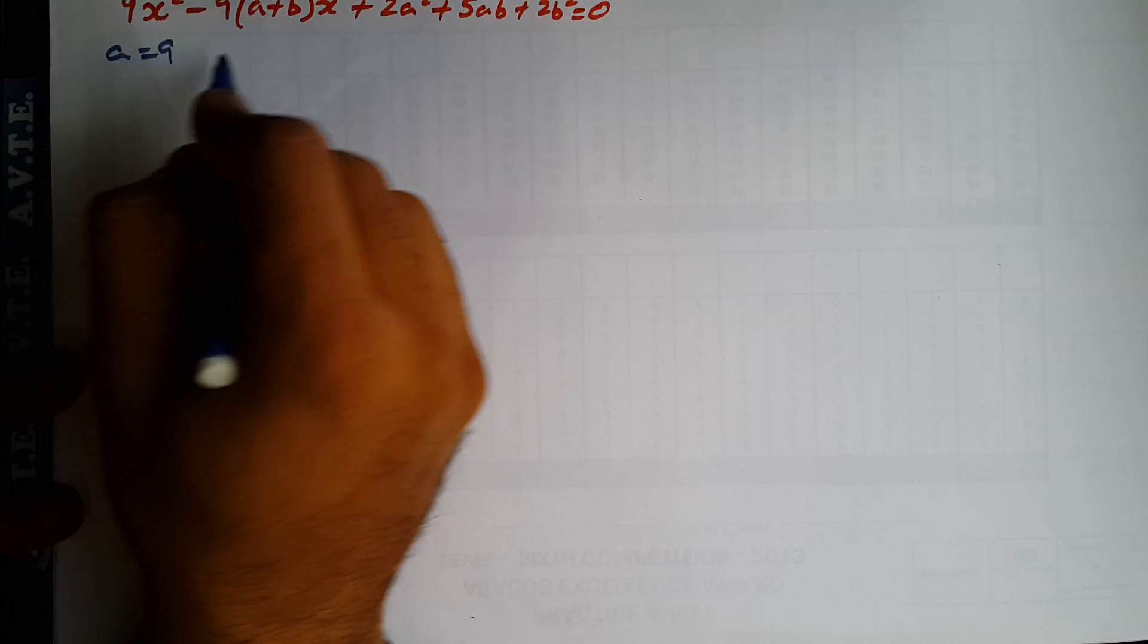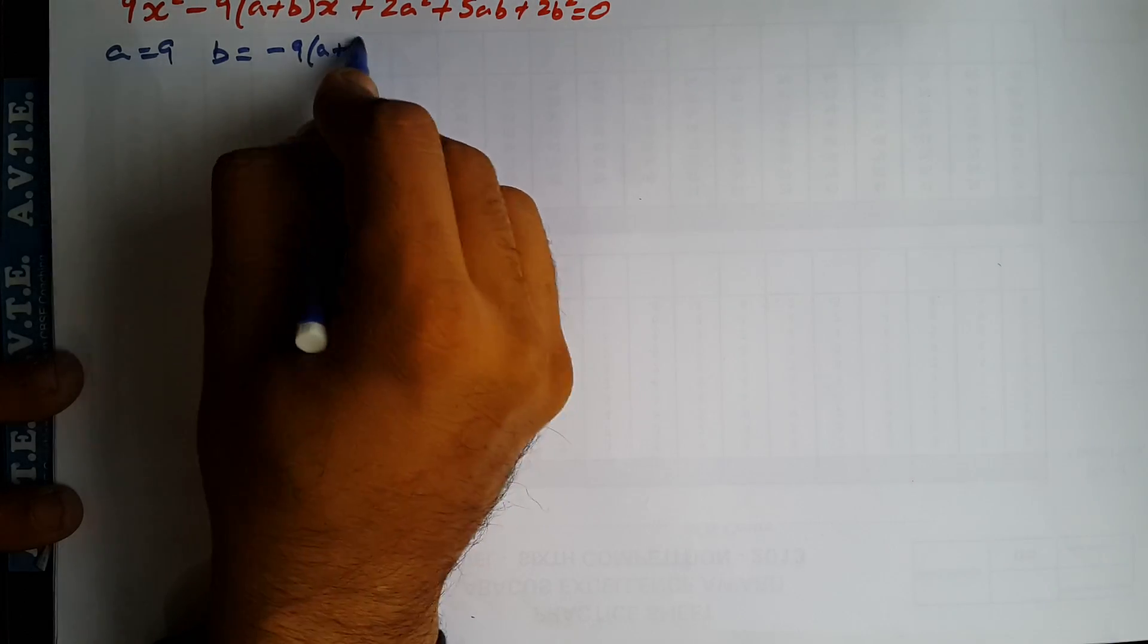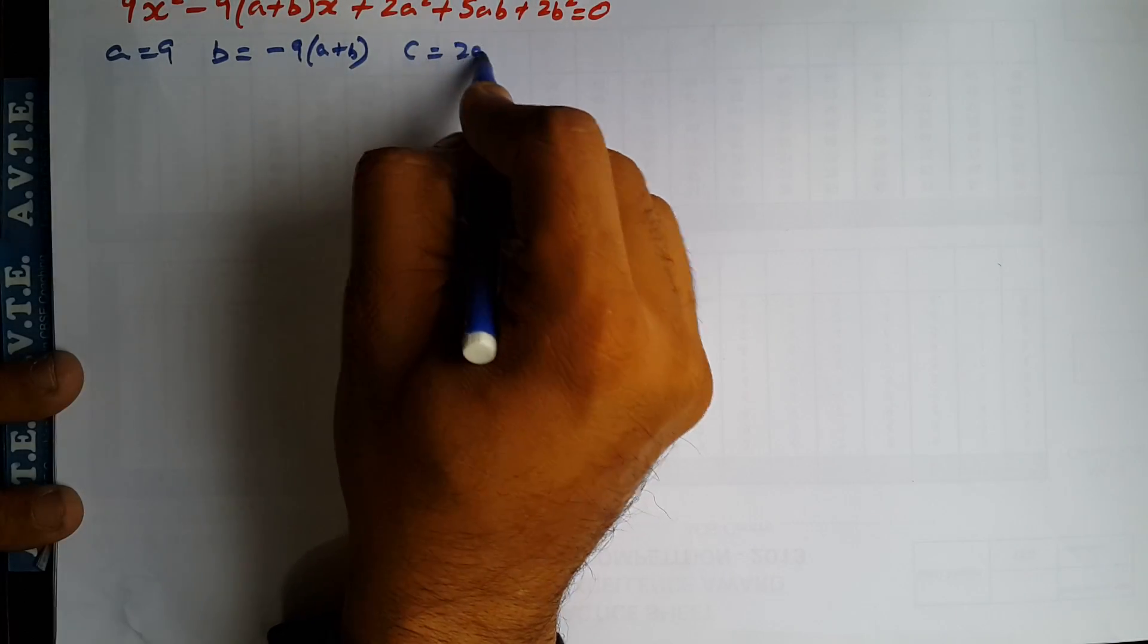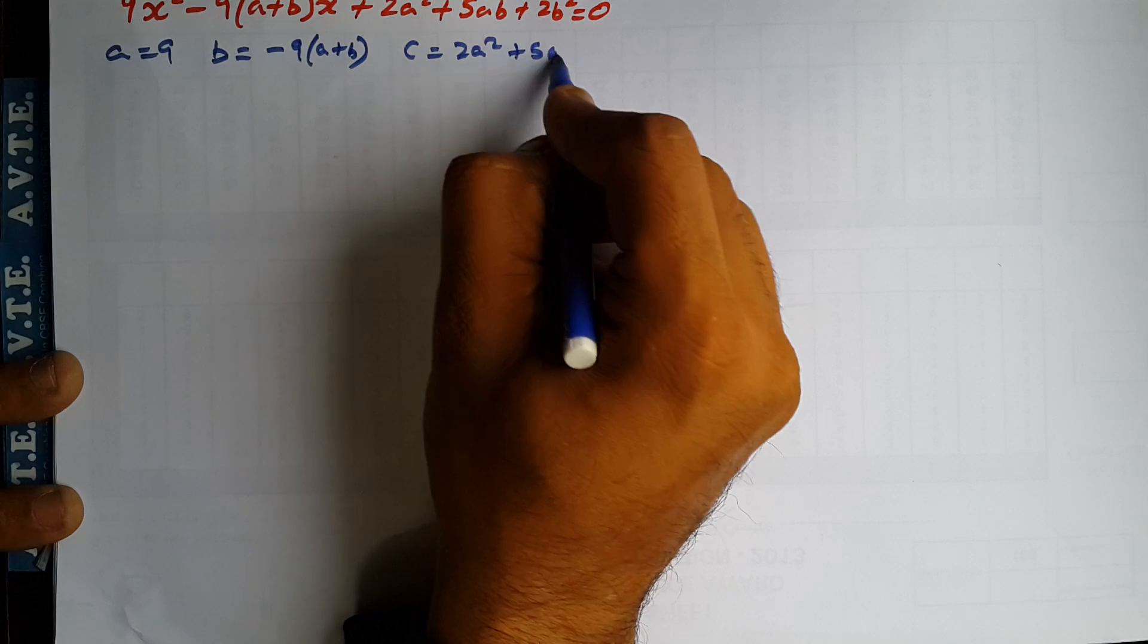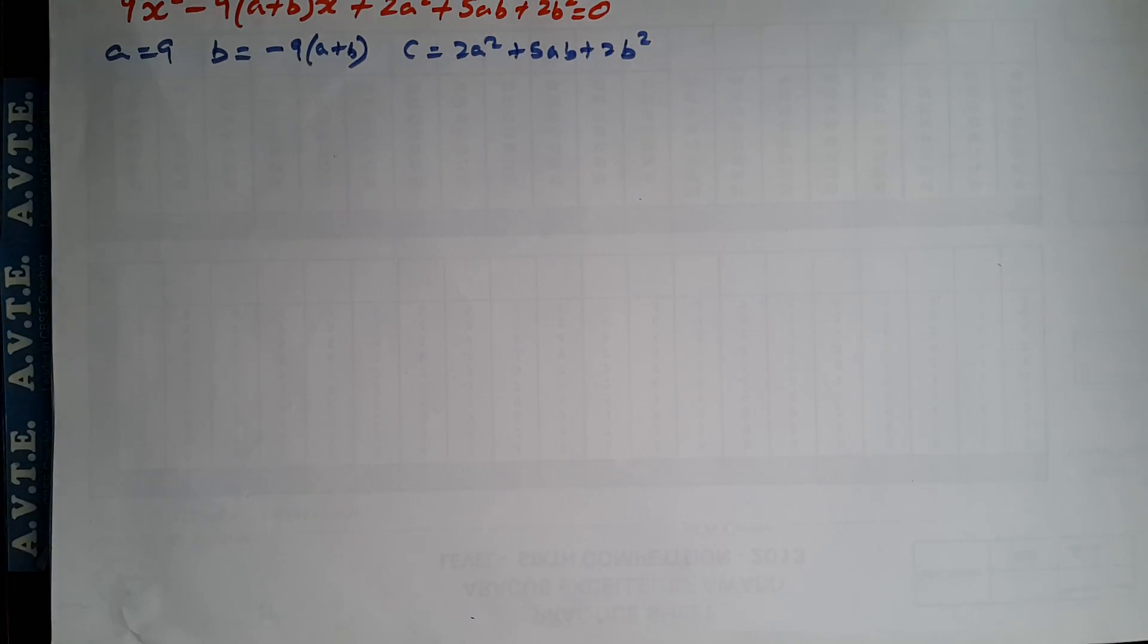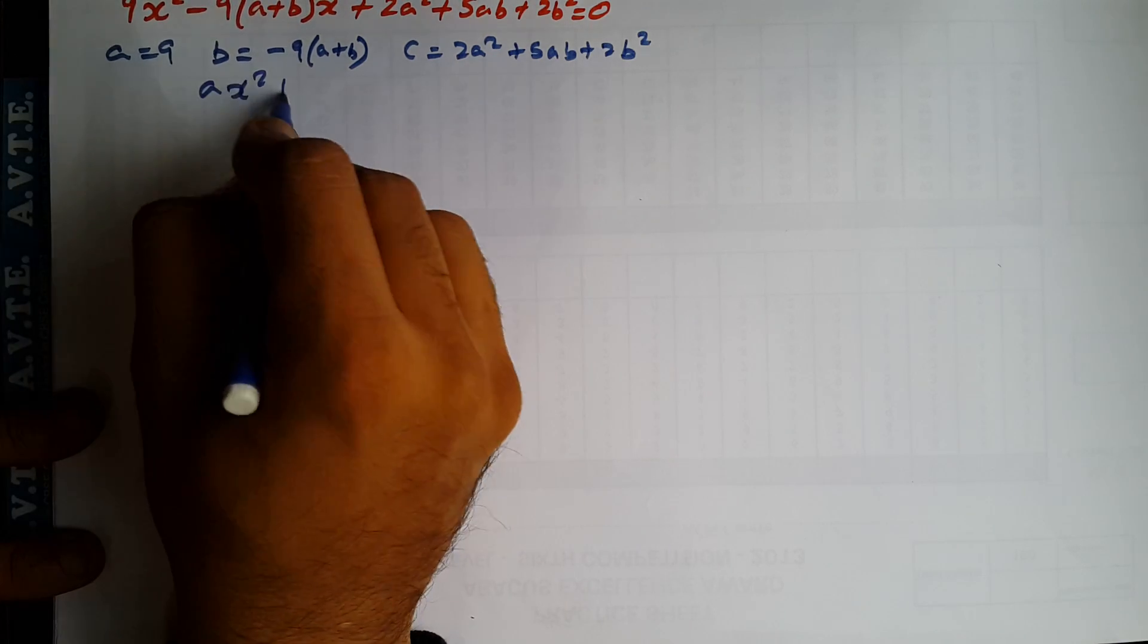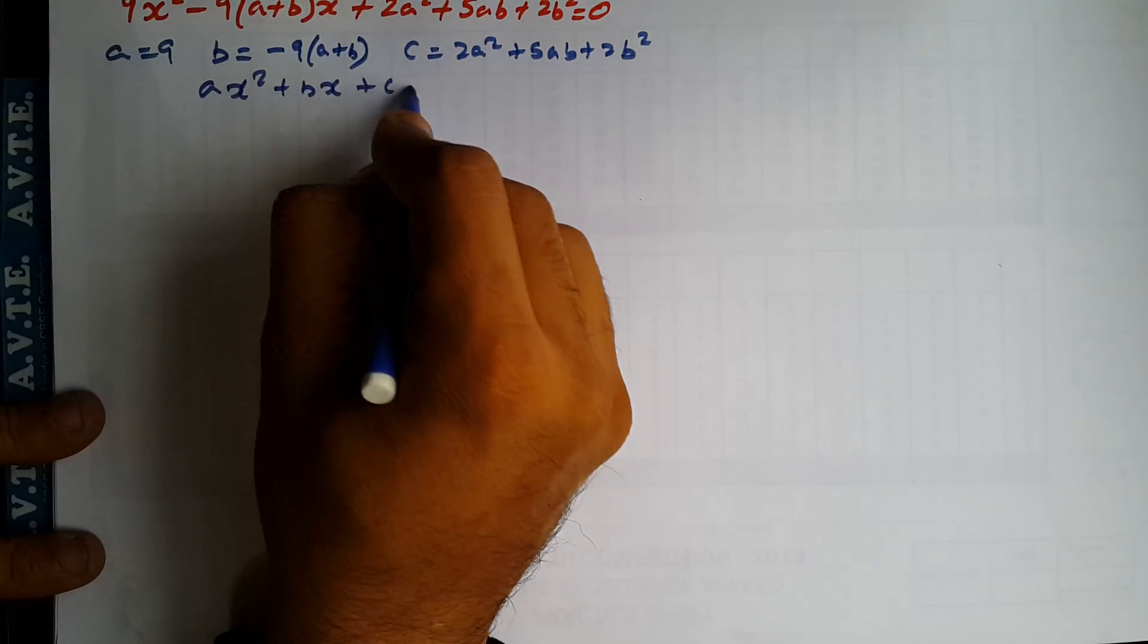What is A? 9. What is B? Minus 9A plus B. And what is C? That is 2A square plus 5AB plus 2B square. It's a general form of quadratic equation AX square plus BX plus C is equal to 0.